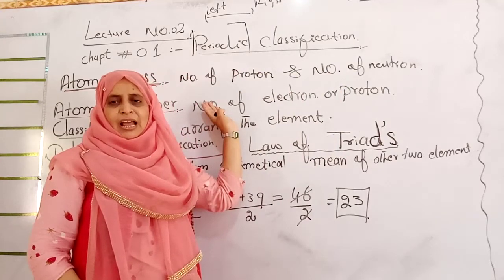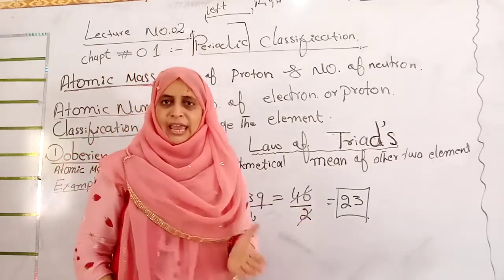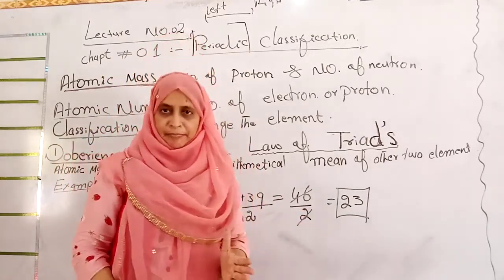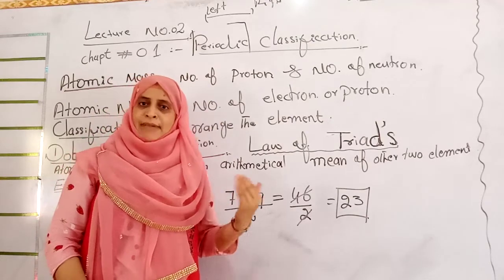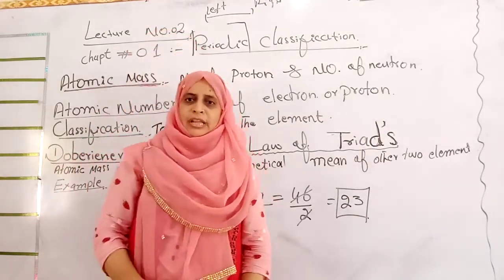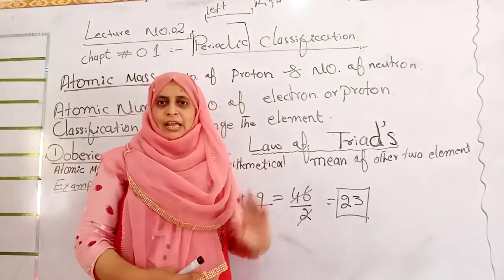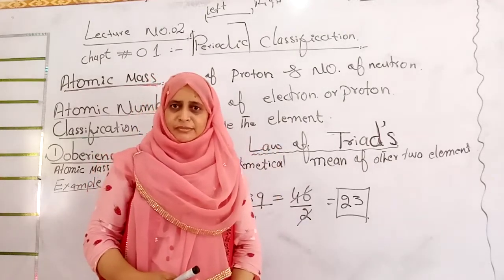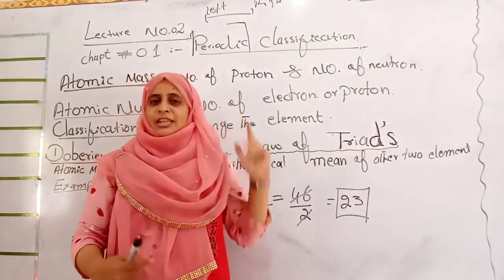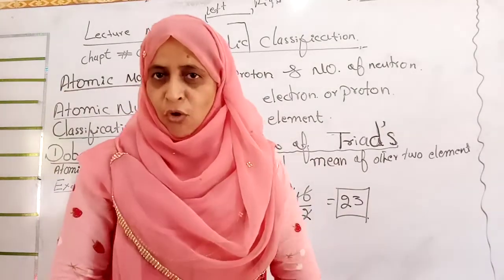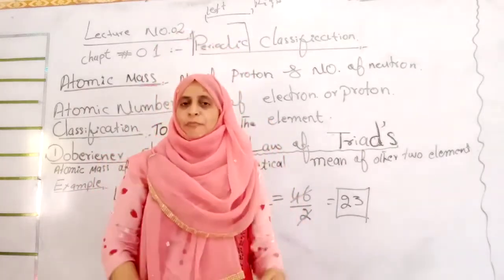Basically, classification depends on atomic mass and atomic number. What do you mean by atomic mass or mass number? The number of protons and number of neutrons present in the nucleus is called atomic mass. While atomic number is the number of protons or number of electrons in the shell or orbital.